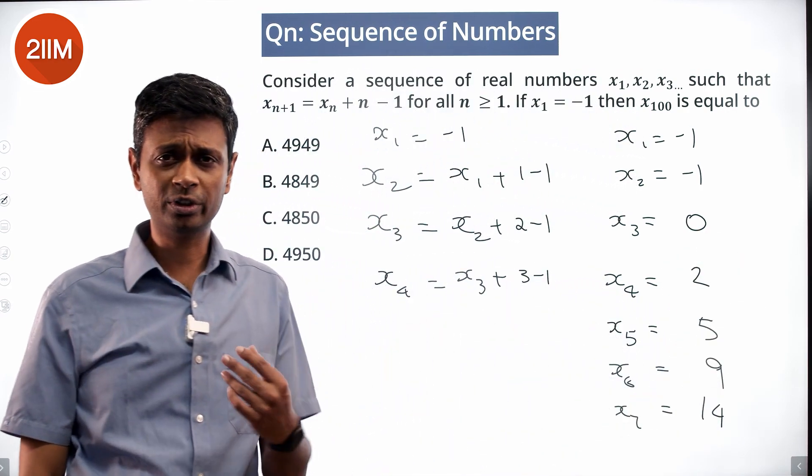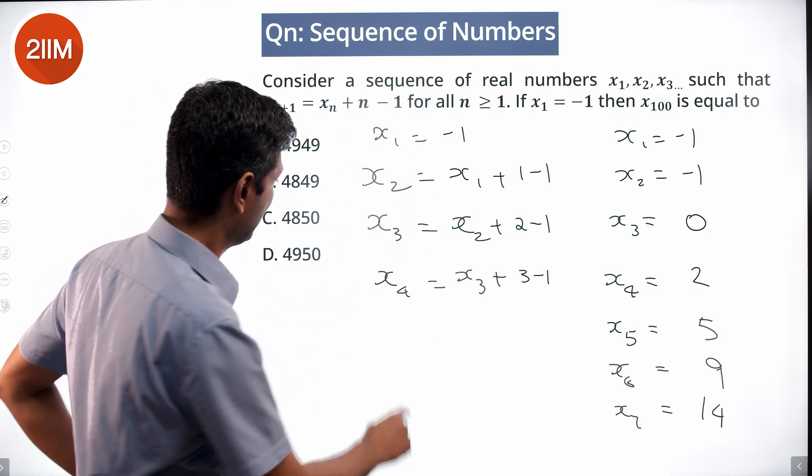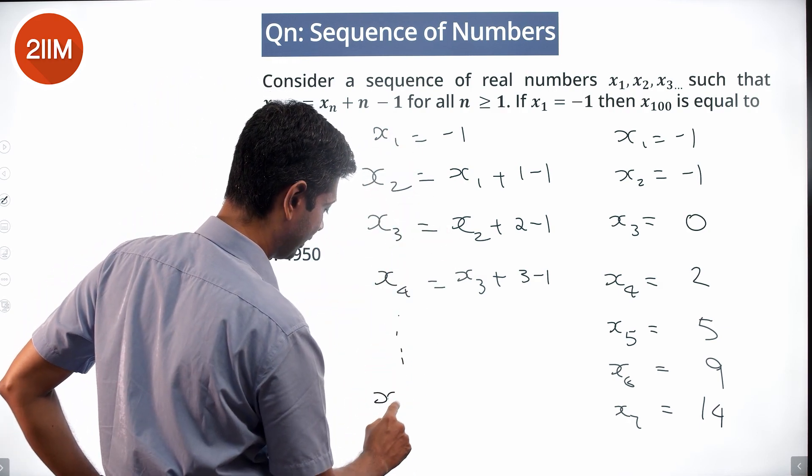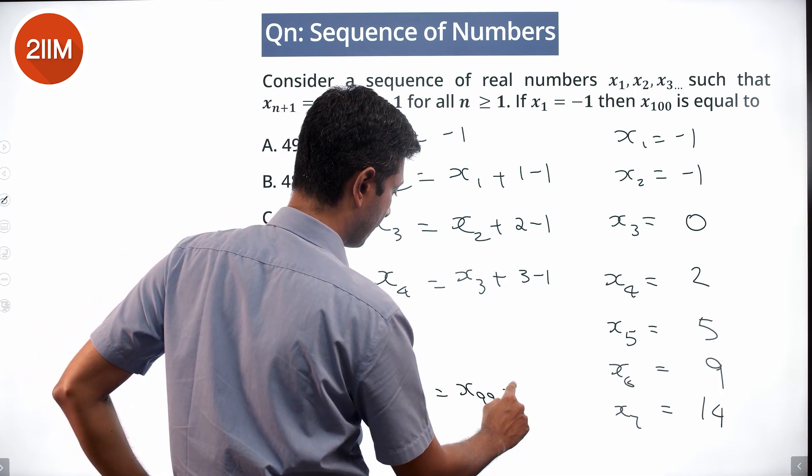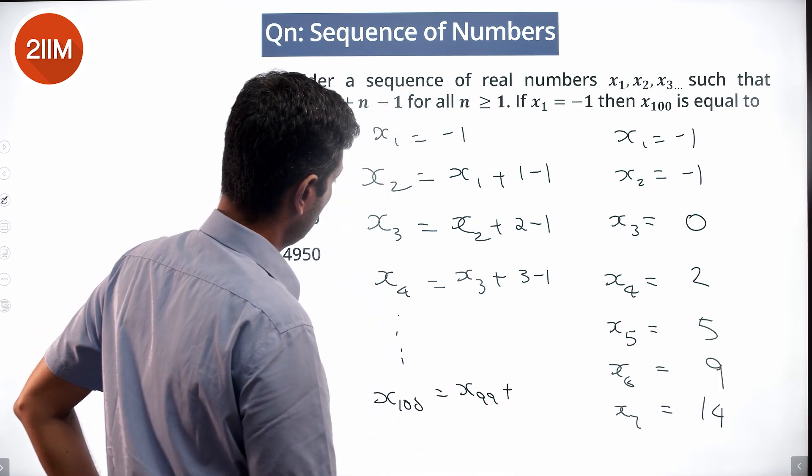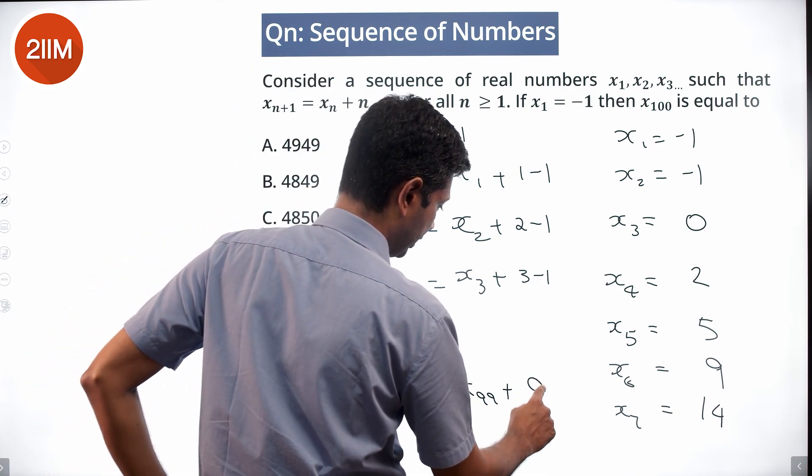There are two ways of doing this. One is to write this equation down all the way to x100 = x99 + 99 - 1, which is x99 + 98.